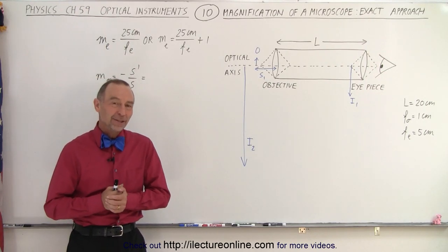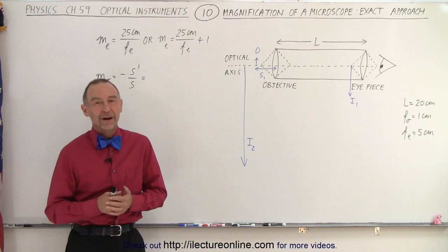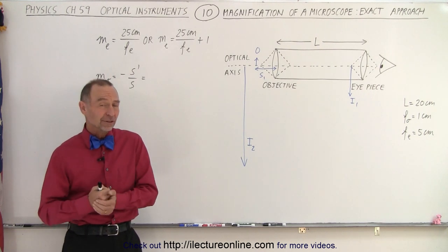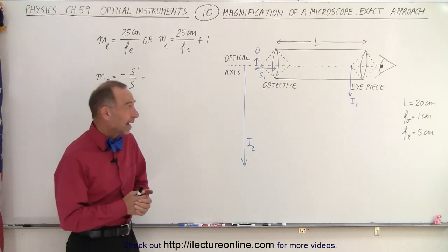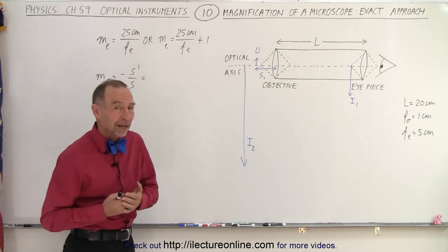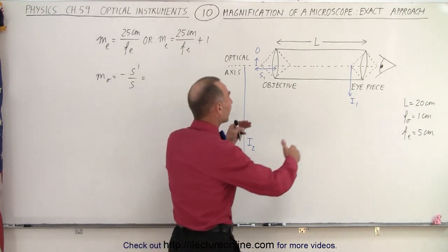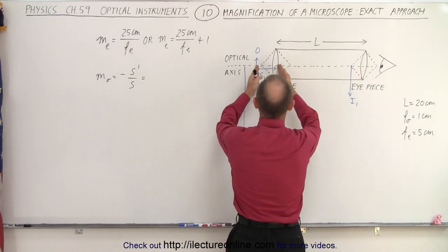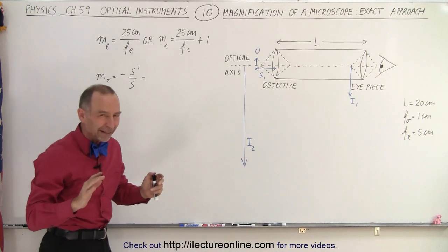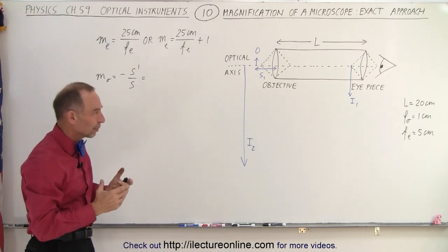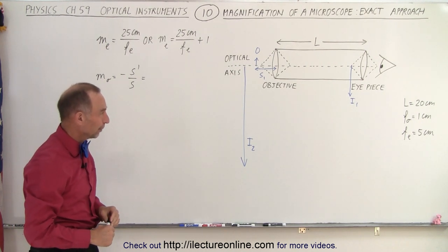Welcome to iLectorOnline. In the previous video we saw how we very quickly could figure out the magnification of the objective, multiplied by the magnification of the eyepiece, to get the magnification of the microscope — but it was just an approximation. We used L as the image distance and the focal length of the objective as the object distance, but that's not exactly correct. Here we're going to come up with a more exact answer.